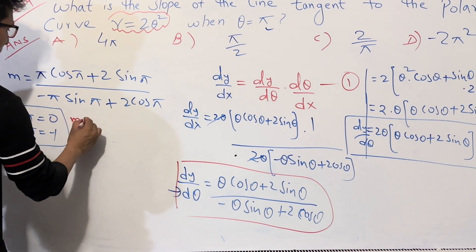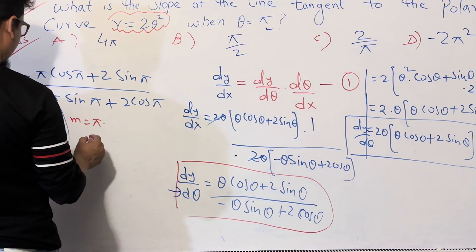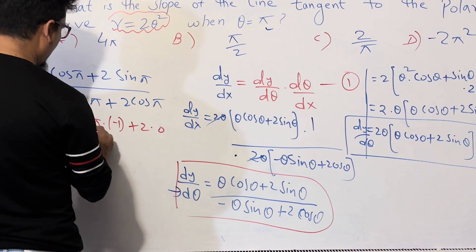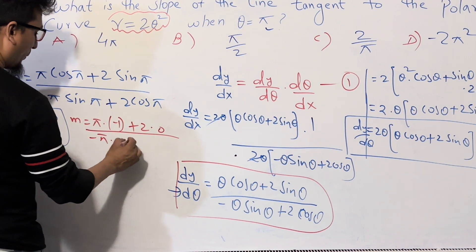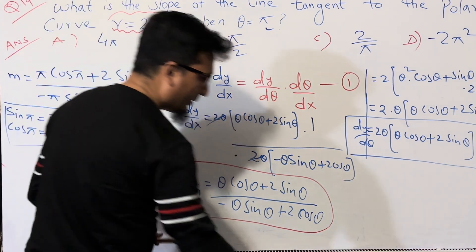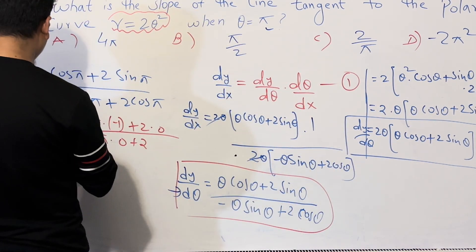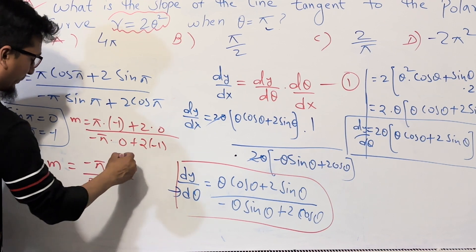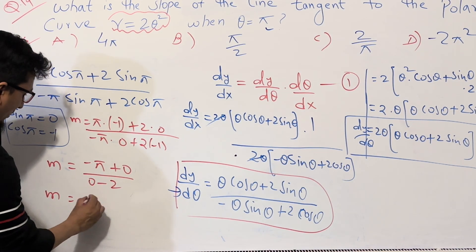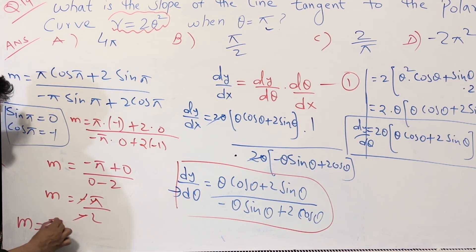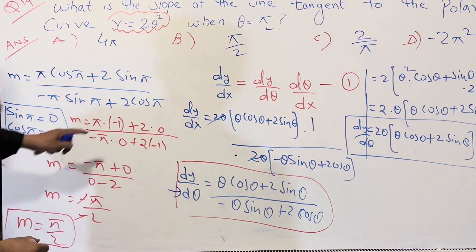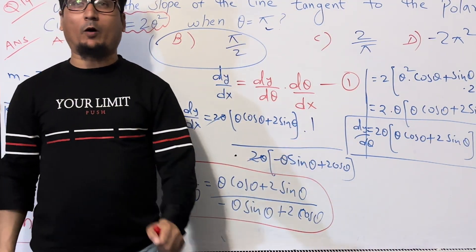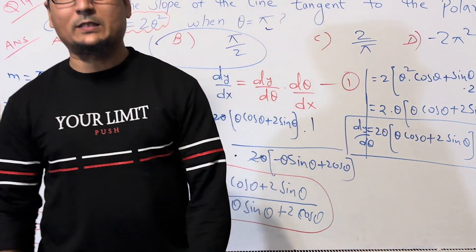Substituting: numerator = π(−1) + 2(0) = −π; denominator = −π(0) + 2(−1) = −2. So the slope m = −π / −2, and the negatives cancel, giving m = π/2. The answer is B. I hope you all understand — if you have a problem, just write in the comments. Assalamu Alaikum, bye bye.